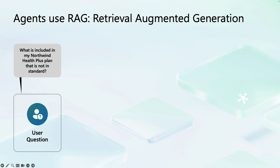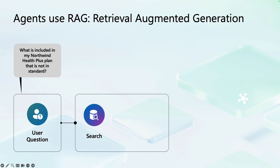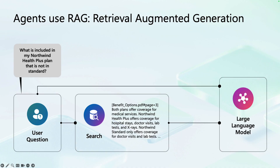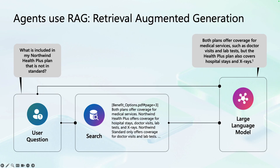One of the fundamental techniques that agents use is something called RAG, or Retrieval Augmented Generation. Here's how it works. Let's say a user asks, what's included in the Northwind Health Plus plan that isn't in the standard plan? The agent wouldn't just guess — it would search grounded data, in this example a PDF with the plan details. It retrieves the relevant section, passes that along into the large language model, and then the large language model crafts a natural, easy-to-understand answer. This combination of search plus content generation is what makes the agent accurate and useful.